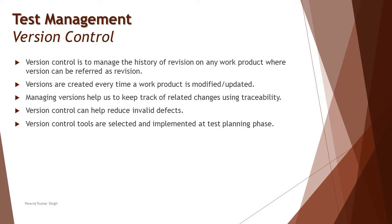So why is version control necessary? Version control is all about managing the history of revisions on any work product, where a version refers to a revision on a work product. A work product could be anything: a story, code, requirements, design, test cases, test plan, project plan — any document created in the life cycle is a candidate for versioning.